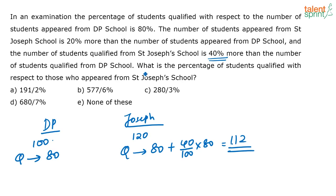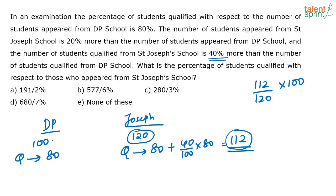Now, what are they asking? What is the percentage of the students qualified with respect to those who appeared at St. Joseph? So, how many students have qualified? 112 students have qualified, and how many students appeared? 120 students appeared. So, what is the required percentage? It is nothing but 112 by 120 into 100. The correct answer here will be 93.33%, that is 280 by 3 approximately.